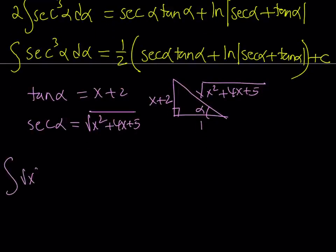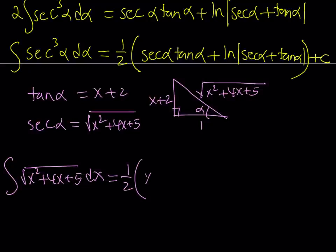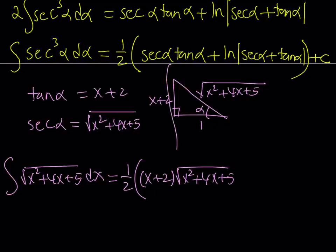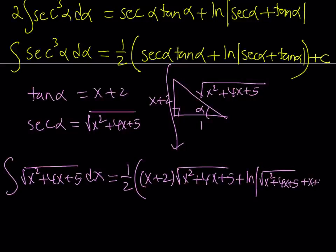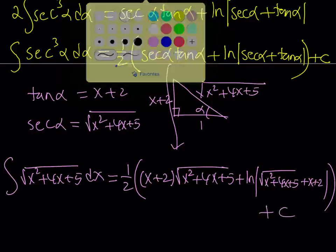So the integral of the square root of x squared plus 4x plus 5 equals one half times: (x plus 2) times the square root of x squared plus 4x plus 5, plus ln of the absolute value of the square root of x squared plus 4x plus 5 plus (x plus 2), plus the constant C. This brings us to the end of this video.